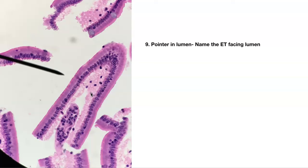Number nine. What is the epithelium facing the lumen? Pointer is in the lumen. The basement membrane is somewhere down here — this is all connective tissue. This is simple columnar. The nuclei are towards the basement membrane. Simple columnar.